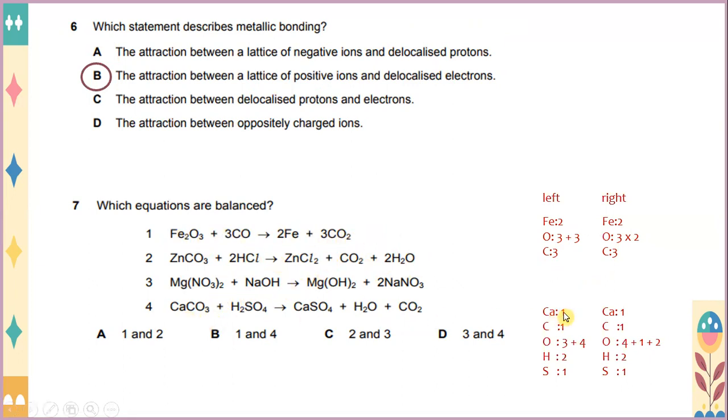Number 4, you get the value of Ca is 1 on the left. C is 1. Oxygen is 3 plus 4, you get 7. Hydrogen is 2, and S is only 1. On the right-hand side, you can see Ca is only 1. C is actually 1. And oxygen is actually 4 plus 1, if you add, plus 2 equals to 7. Hydrogen is 2, it's also hydrogen, it's 2. And S is equal to 1, the same thing like this, S is equal to 1. That means 1 and 4 shows that equations are balanced.